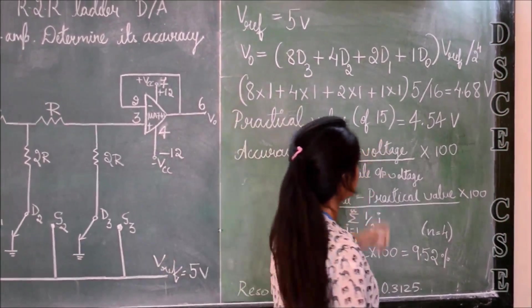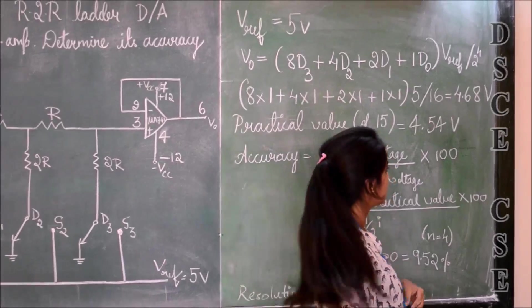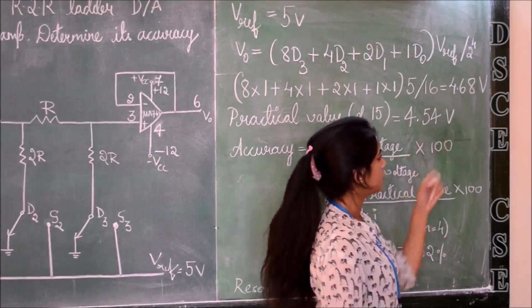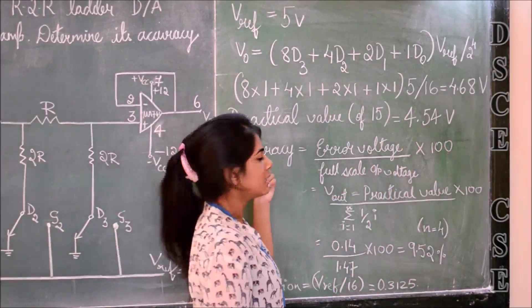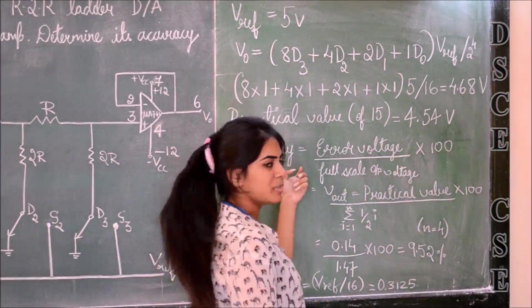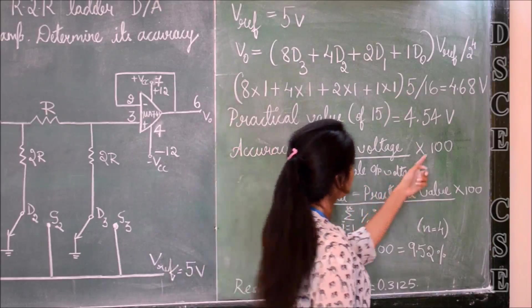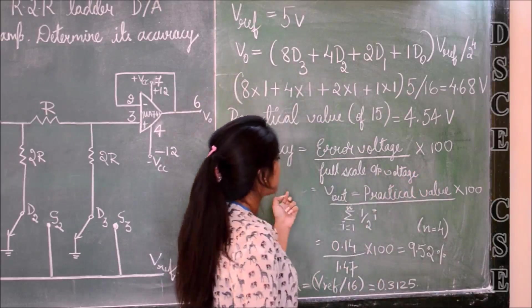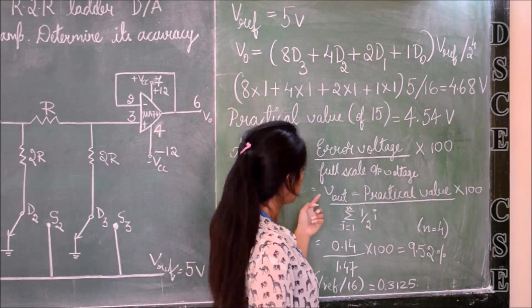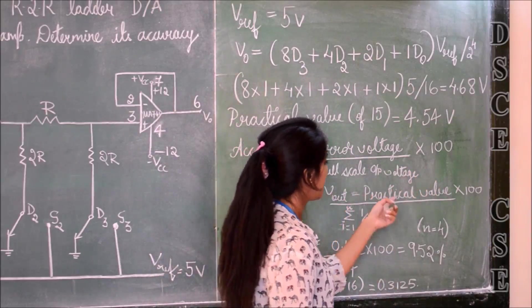Practical value as we have done in the experiment, we got 4.54 volts. To find accuracy, the formula given is error voltage divided by full-scale output voltage into 100. The formula for error voltage is Vout theoretical minus Vout practical.